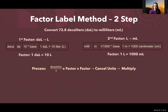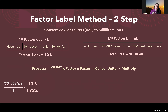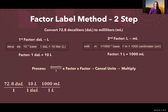The process here is very similar — we add an additional multiplication of a second factor. We have our quantity, 72.8 decaliters. I need decaliters on the bottom, so I'll set up my factor as 10 liters on top and one decaliter on the bottom, allowing decaliters to cancel. Then applying the second factor, 1,000 milliliters over one liter, having liters on the bottom cancels out liters and leaves us with milliliters — exactly what we want.